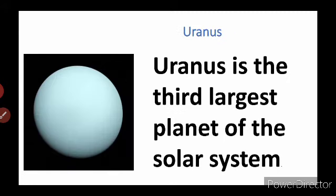After Neptune, we are going to learn about Uranus. Uranus is the third largest planet of the solar system. So to recap: the largest planet is Jupiter, the second largest is Saturn, and the third largest is Uranus. Keep that in mind.